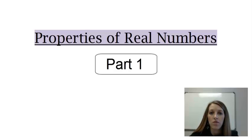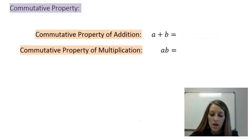So this video is mostly over vocabulary, but there will be some examples over homework problems that go along with this as well. So our first property is the commutative property and we have this in two different versions of it.